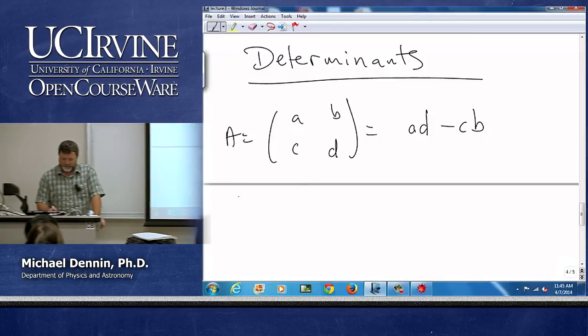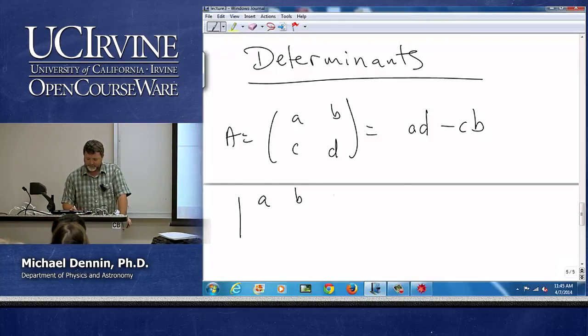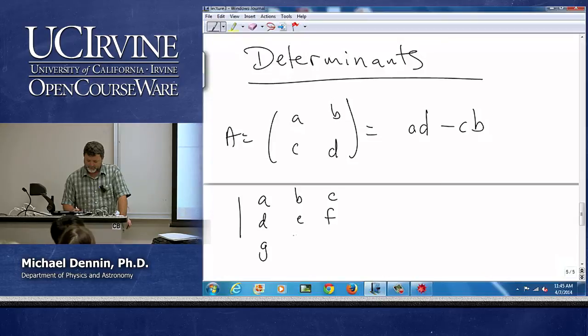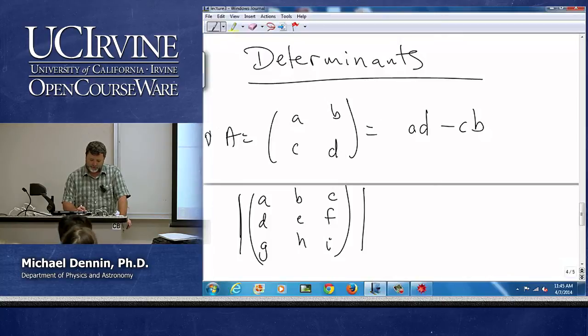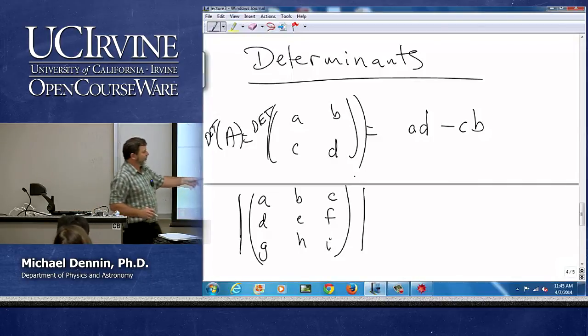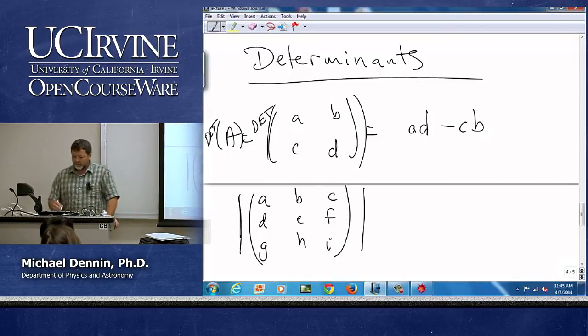So if I want to do a three by three, so a determinant is also, oops, determinant of a, determinant of that is often written with two straight lines. Now, what do I do?